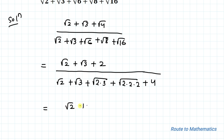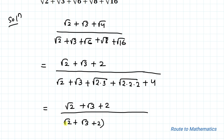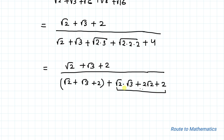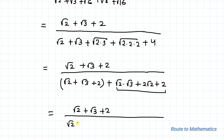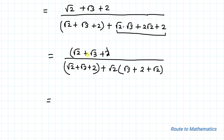This gives us root 2 plus root 3 plus 2, divided by root 2 plus root 3 plus root 2 times root 3, plus root 2 times root 2, plus root 2 times root 2 times root 2, plus 4. We split 4 as 2 plus 2 and rewrite the denominator by factoring out common terms involving root 2 and root 3.